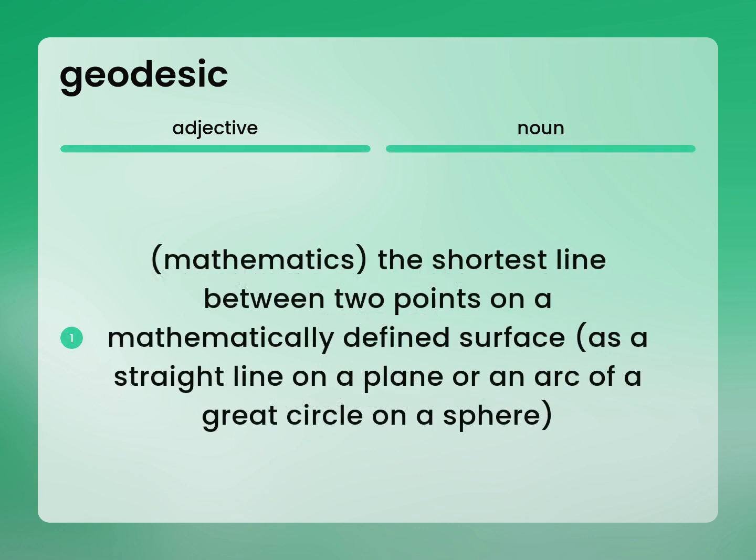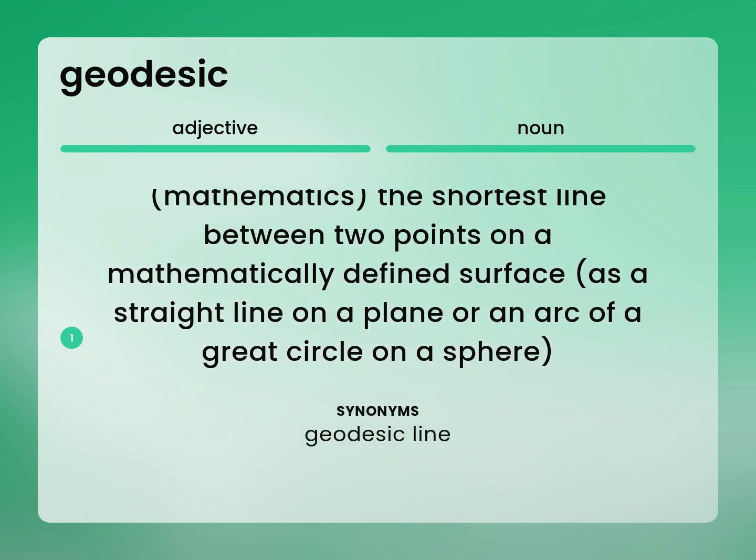Mathematics: the shortest line between two points on a mathematically defined surface, as a straight line on a plane or an arc of a great circle on a sphere. Geodesic line.